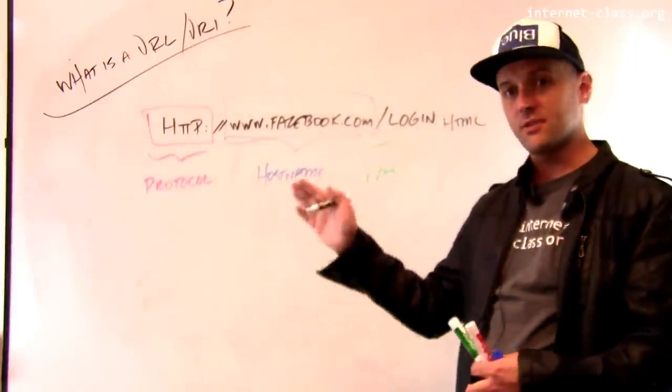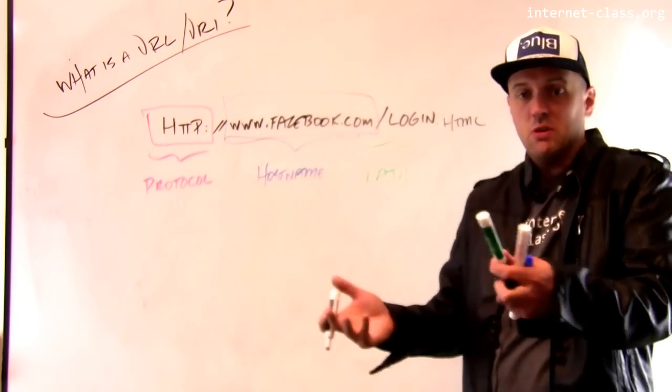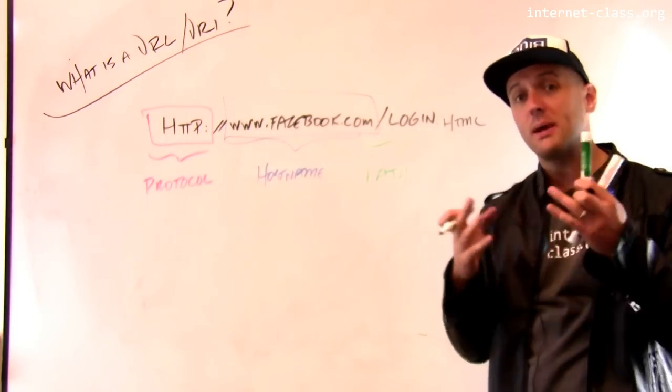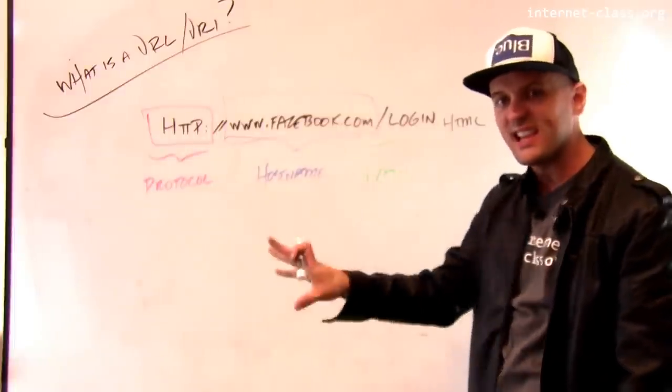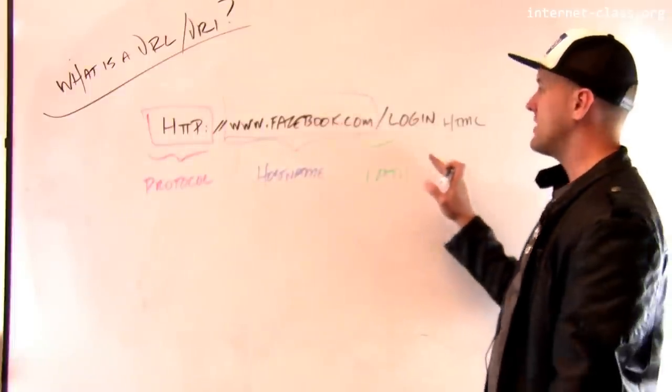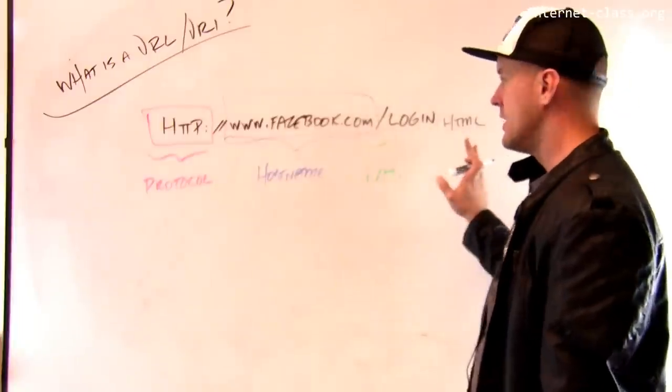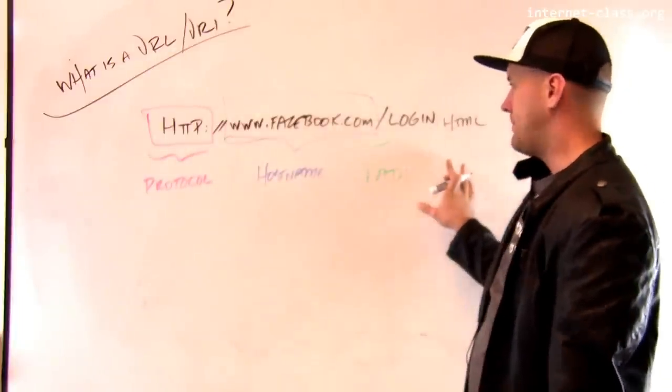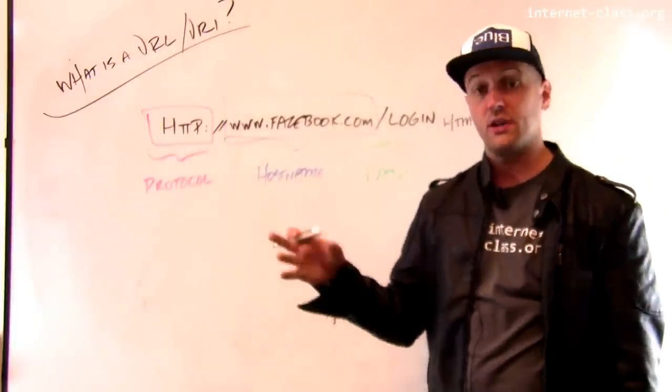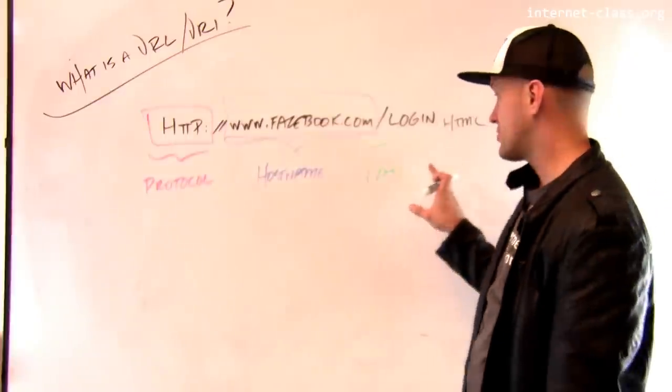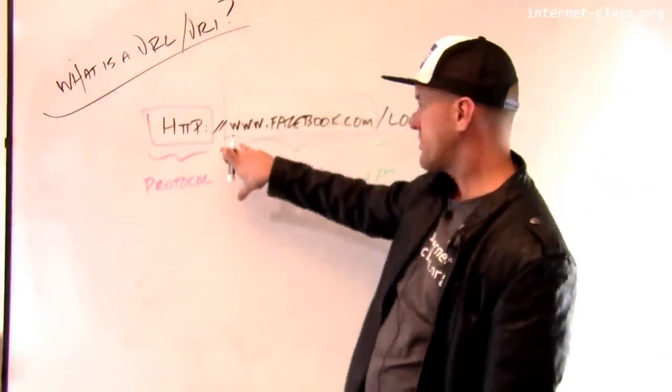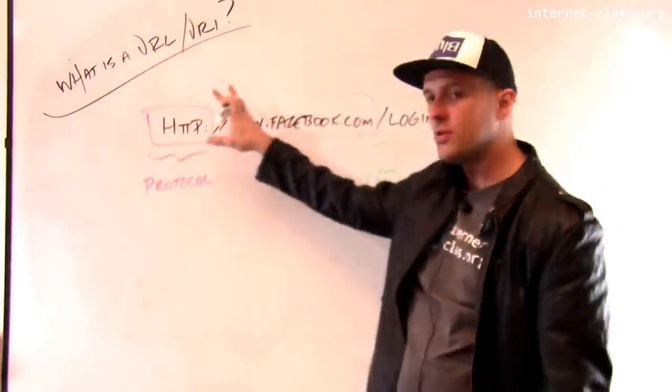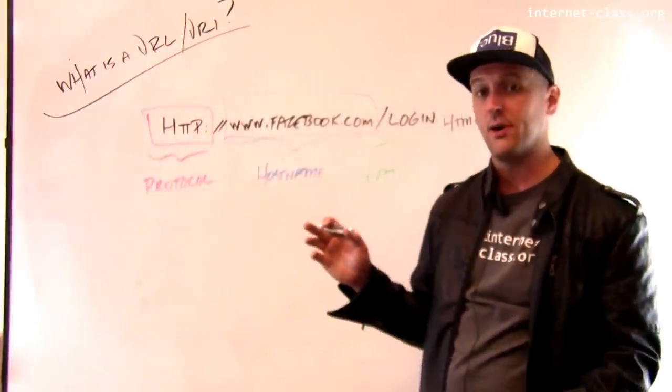Sometimes when you browse on the web, you'll see things that have an HTML extension or a PHP extension or something like that. And those might actually be files. So there might be a file on the web server sitting there somewhere in some directory that you are now retrieving that's called login.html. So the semantics of this are, if I load this into a web browser and issue a GET request, what I'm doing is I'm retrieving the document called login.html from a host named www.facebook.com using the HTTP protocol. So this is the structure of a URI.